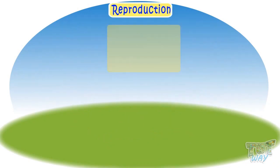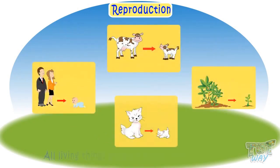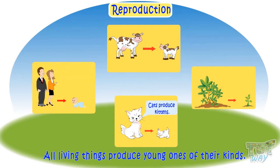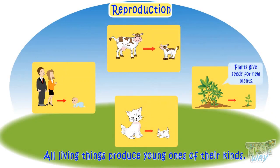Reproduction. All living things produce young ones of their own kind. Like humans make babies, cats produce kittens, cows produce calves, and plants give seeds that grow into new plants. So kids, these are the features of living things.